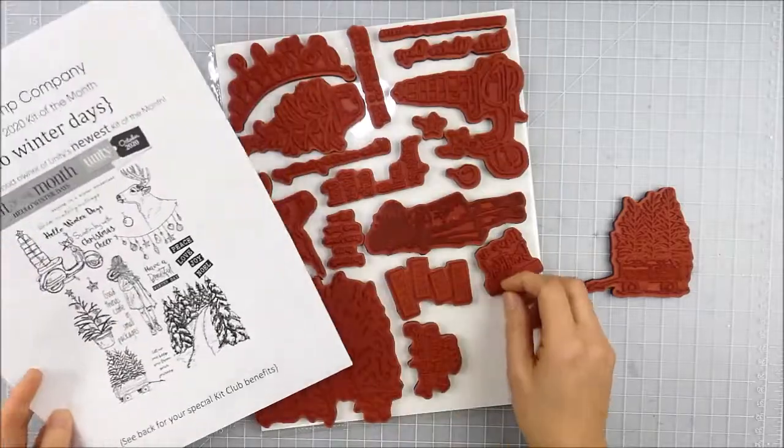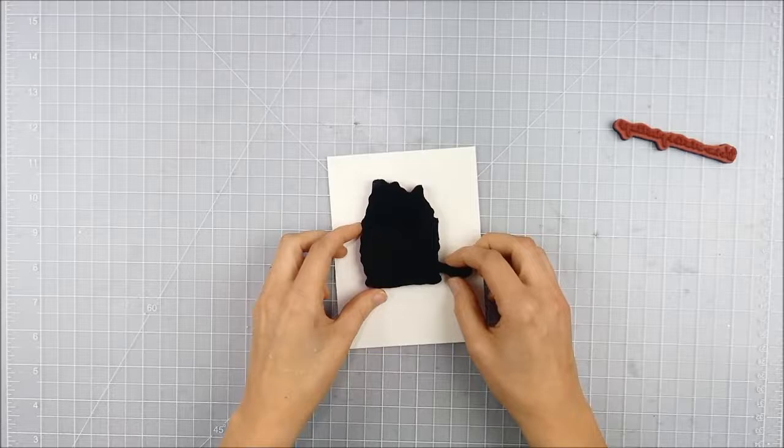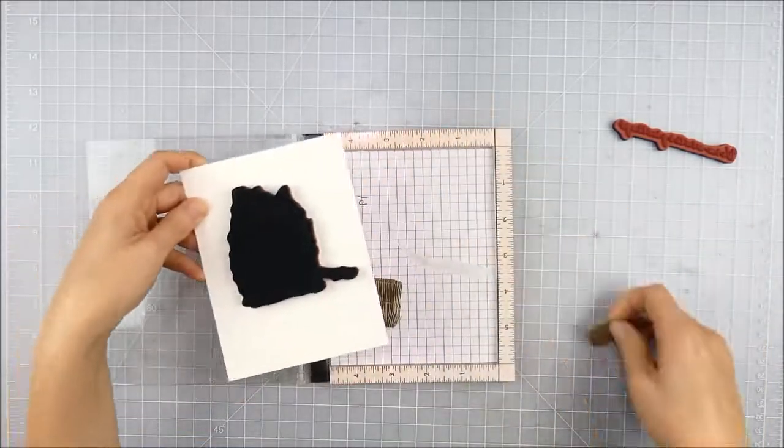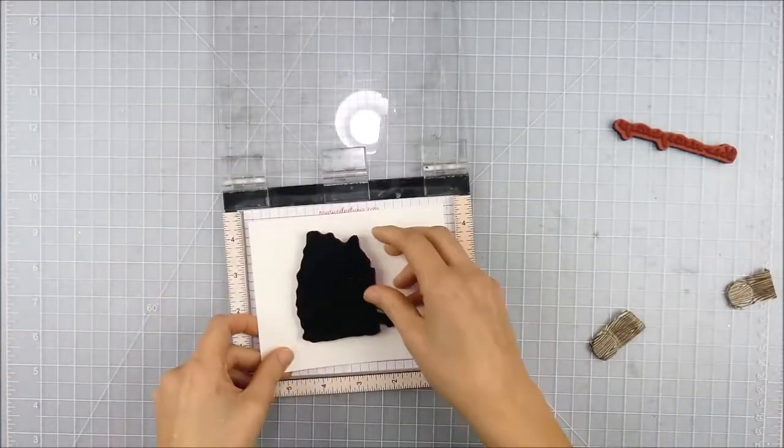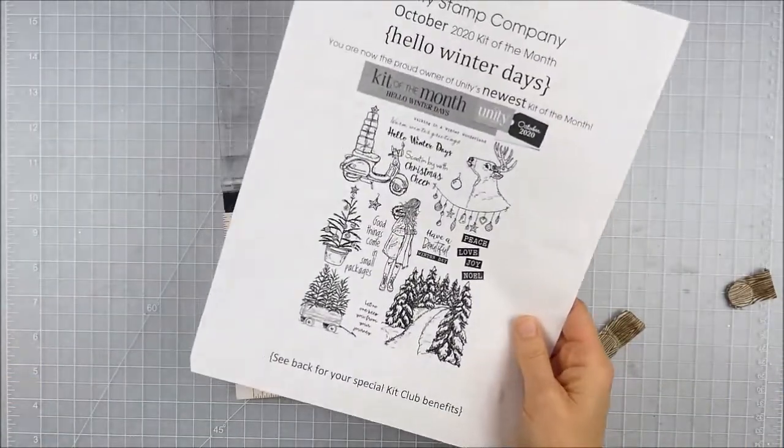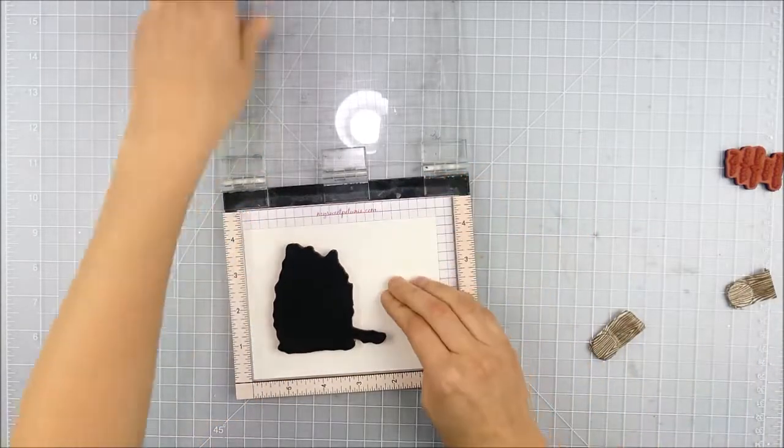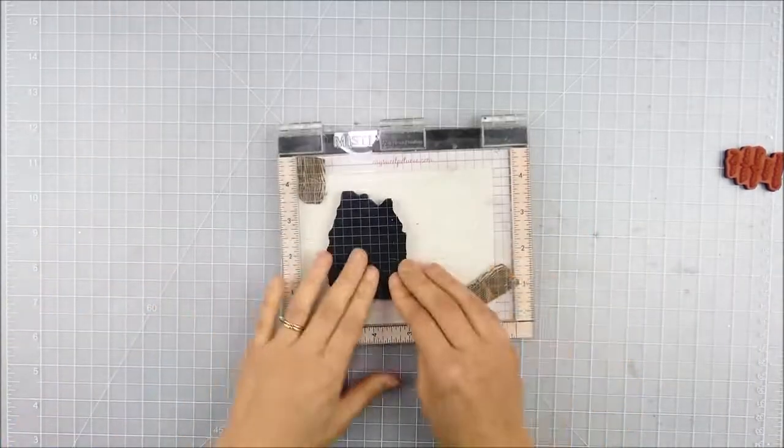I wanted to use that cute little wagon full of trees from this kit and a sentiment. I ended up changing my mind on the sentiment, so that ended up changing before we were finished. At first I was going to make this card vertical, but as I started to lay the image on there I decided to do this as a horizontal card. It just felt like a better fit.